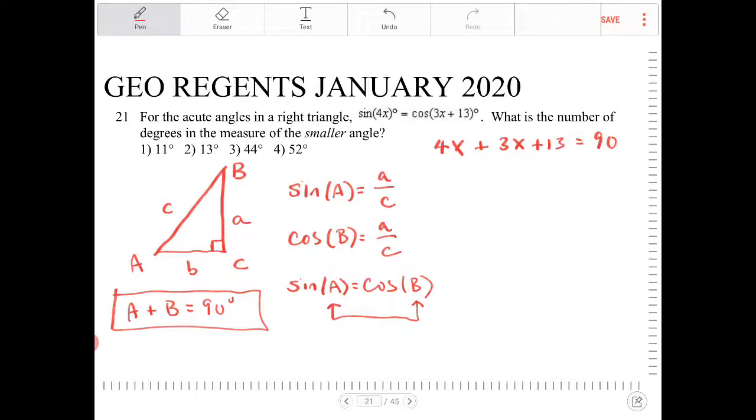I want to solve for this. 4x plus 3x, that's 7x. Subtract both sides by 13, I end up with 77. Divide by 7, I end up with x is equal to 11.